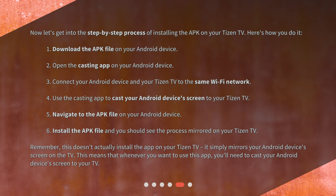4. Use the casting app to cast your Android device's screen to your Tizen TV. 5. Navigate to the APK file on your Android device. 6. Install the APK file and you should see the process mirrored on your Tizen TV. Remember, this doesn't actually install the app on your Tizen TV — it simply mirrors your Android device's screen on the TV. This means that whenever you want to use this app, you'll need to cast your Android device's screen to your TV.